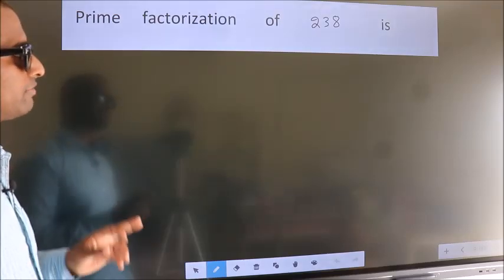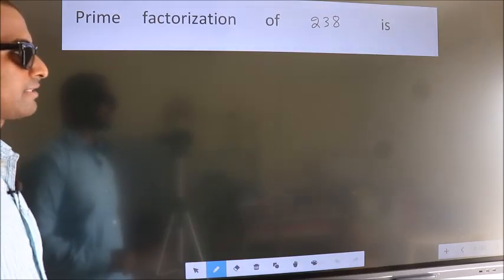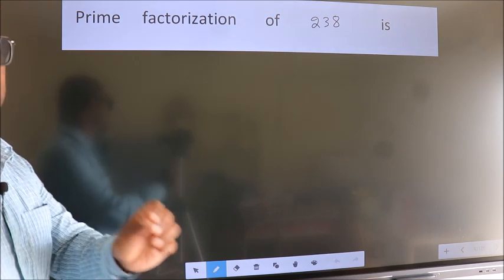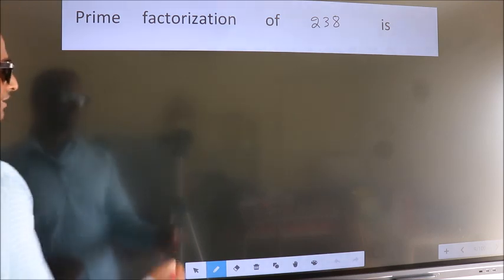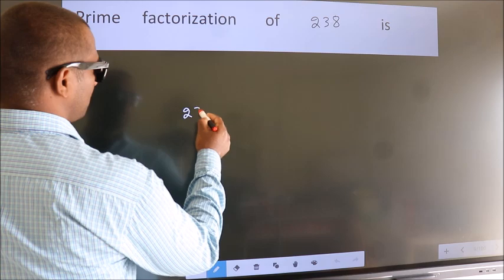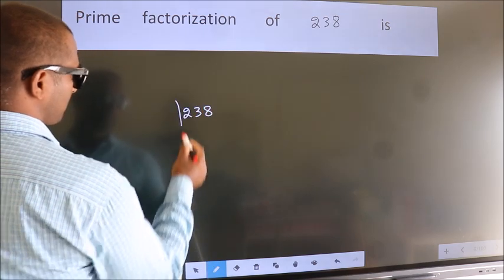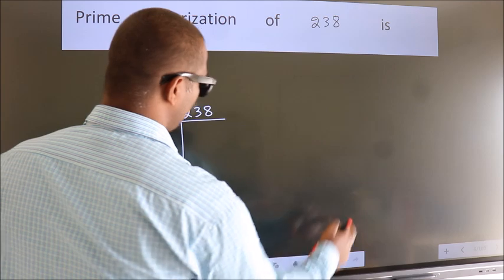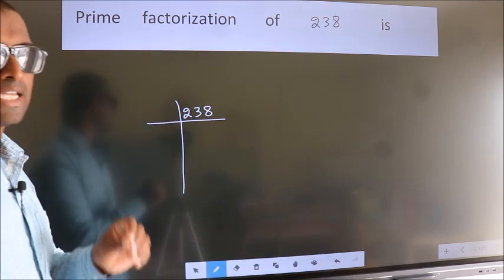Prime factorization of 238. To do prime factorization, we should frame it in this way. 238 here. This is your step 1.